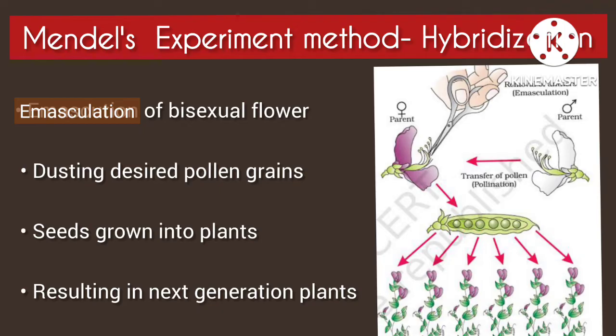First, we have a parent plant. We have anthers and pollen grains. The pollen grains from the stamen are removed from the flower, and then that pollen is used for pollination on the desired plant.